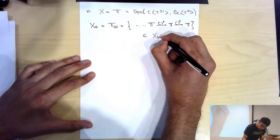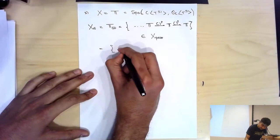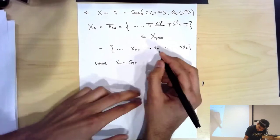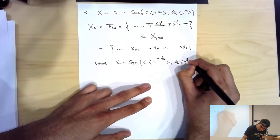We need to work with these objects concretely, so let me name each individual level. We can think of T_∞ as the tower X_{n+1} → X_n → ⋯ → X_0, where X_n = Spa(C⟨t^{±1/p^n}⟩, O_C⟨t^{±1/p^n}⟩). The transition map is the obvious one: t maps to t.